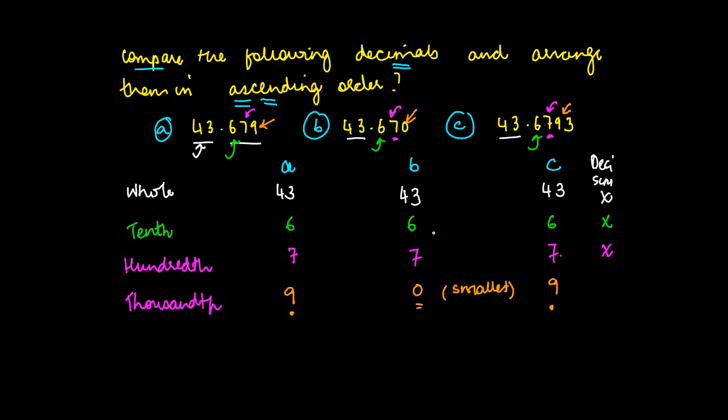So we need to move one place forward for these two numbers. But now comes the question: after 9 I don't have any digits here, whereas I have 3 at the ten thousandth place.